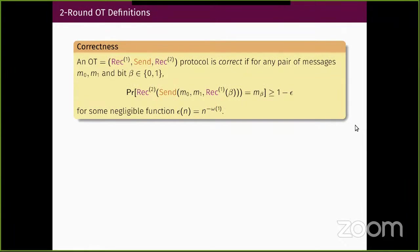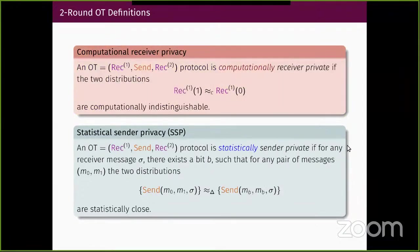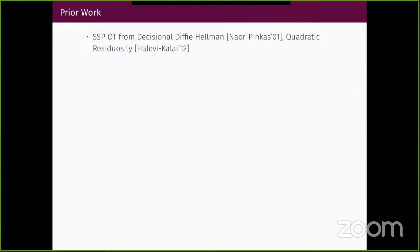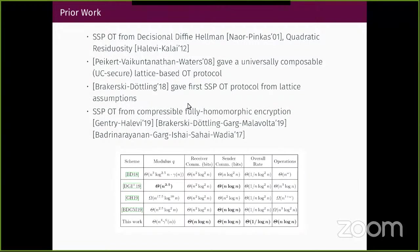An oblivious transfer protocol should satisfy basic correctness, but we're interested in the security properties. For the sender, we want statistical privacy: no matter what the receiver does, the output is statistically close to a distribution independent of one of the messages. For the receiver, we want computational privacy: the receiver's bit should be computationally hidden. Our starting point is the Peikert-Döttling protocol.